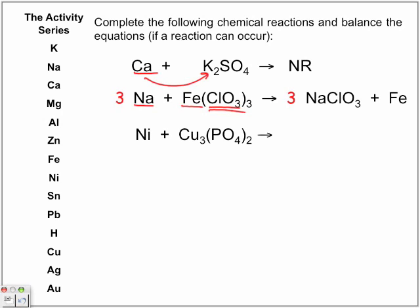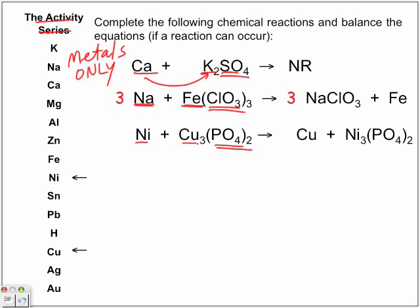Remember, the activity series only applies when you have two metals — the activity series is metals only. If you've identified a single displacement reaction, you are always looking for metal-metal. Will nickel knock out copper? Nickel is higher; copper is lower — so yes, nickel will knock out copper, leaving copper lonely. Think of it like a bully coming in and telling copper: 'Get lost, you're going to be lonely.' Then balance the equation.